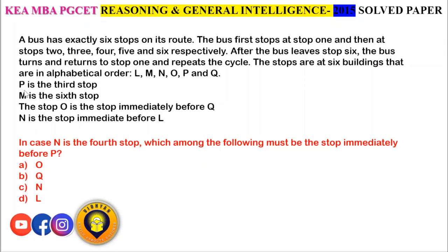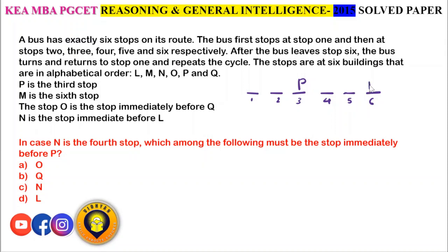The conditions given are: P is the third stop. There are 6 stops totally at buildings L, M, N, O, P and Q, and we don't know in which order the buildings are. So P is the 3rd stop and M is the 6th stop.